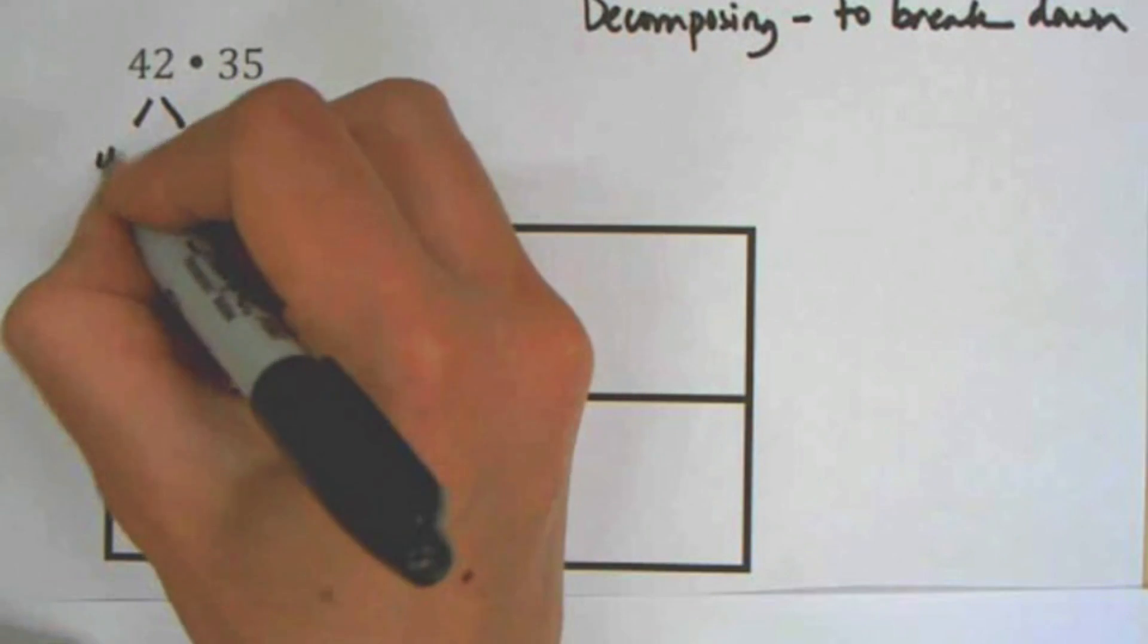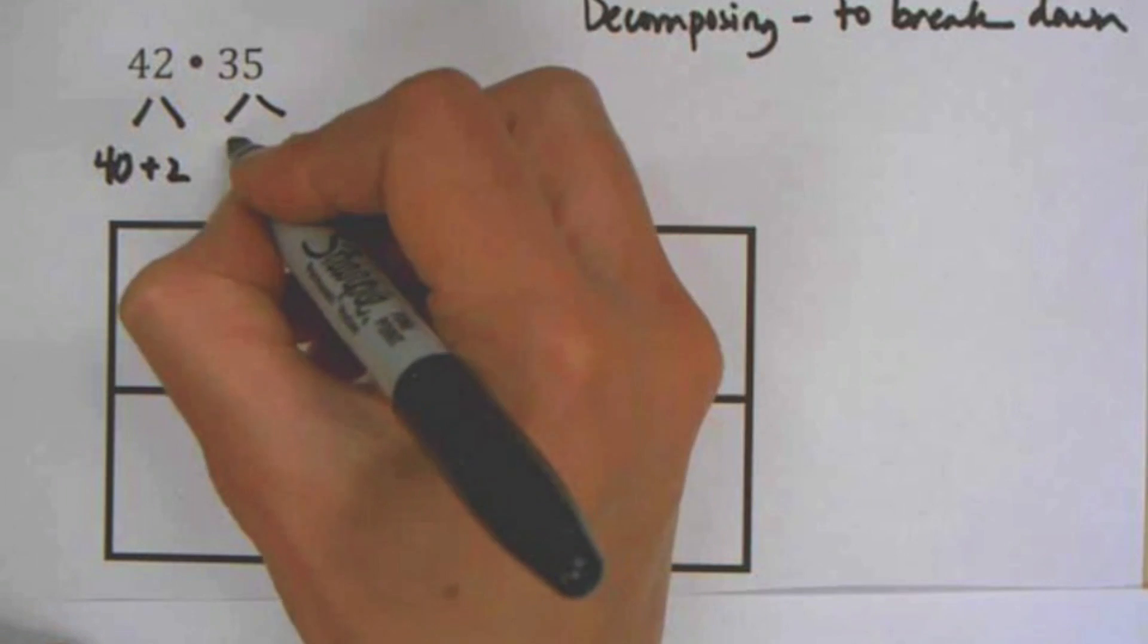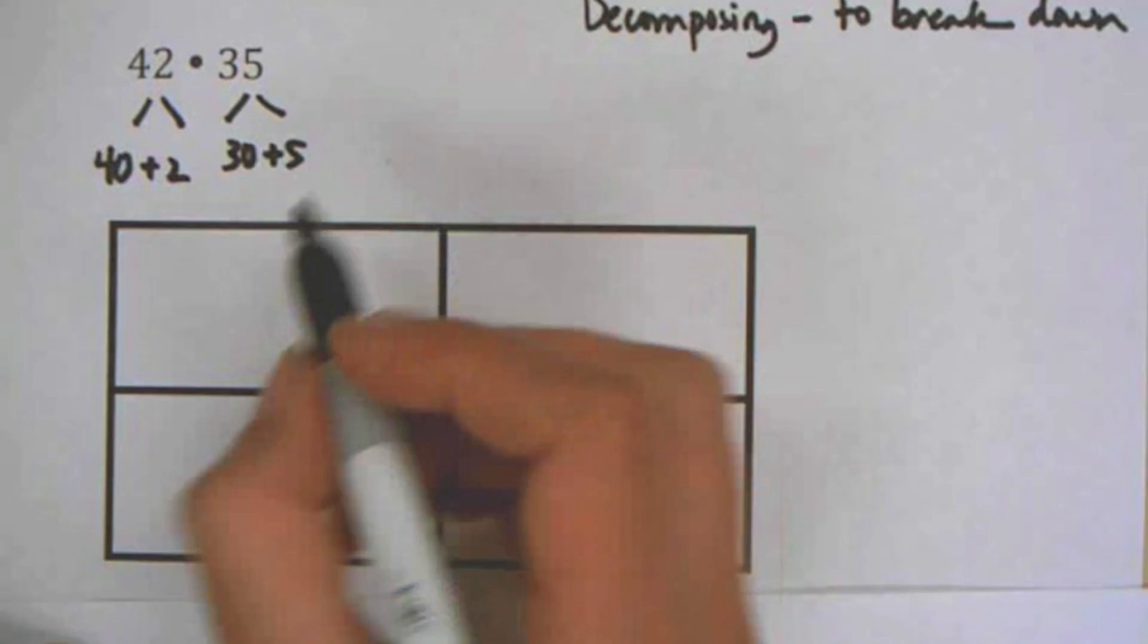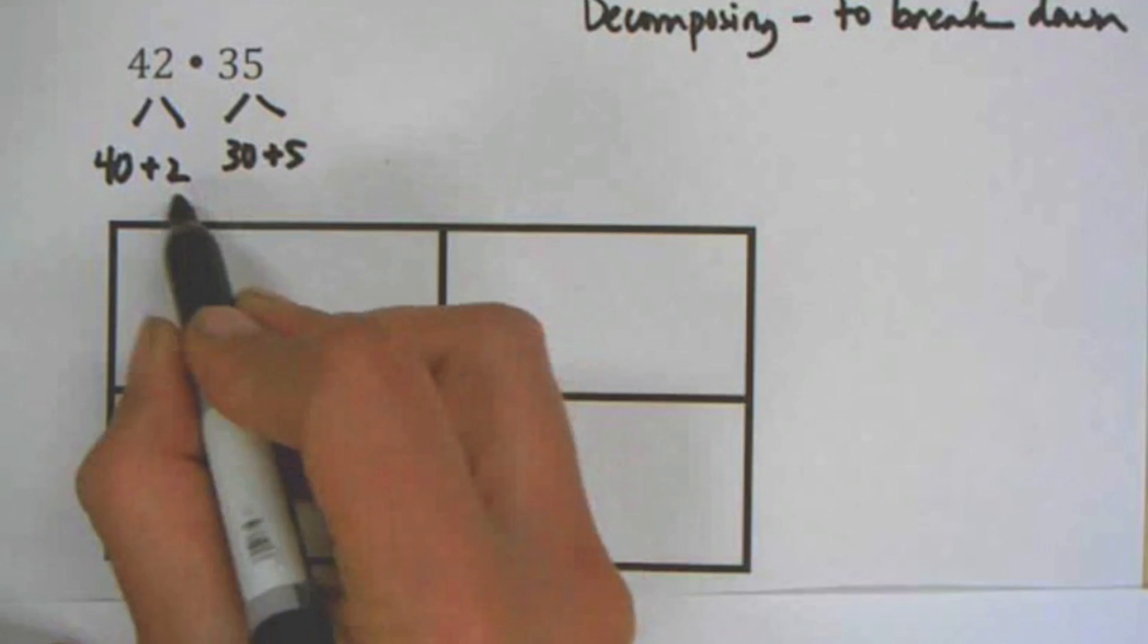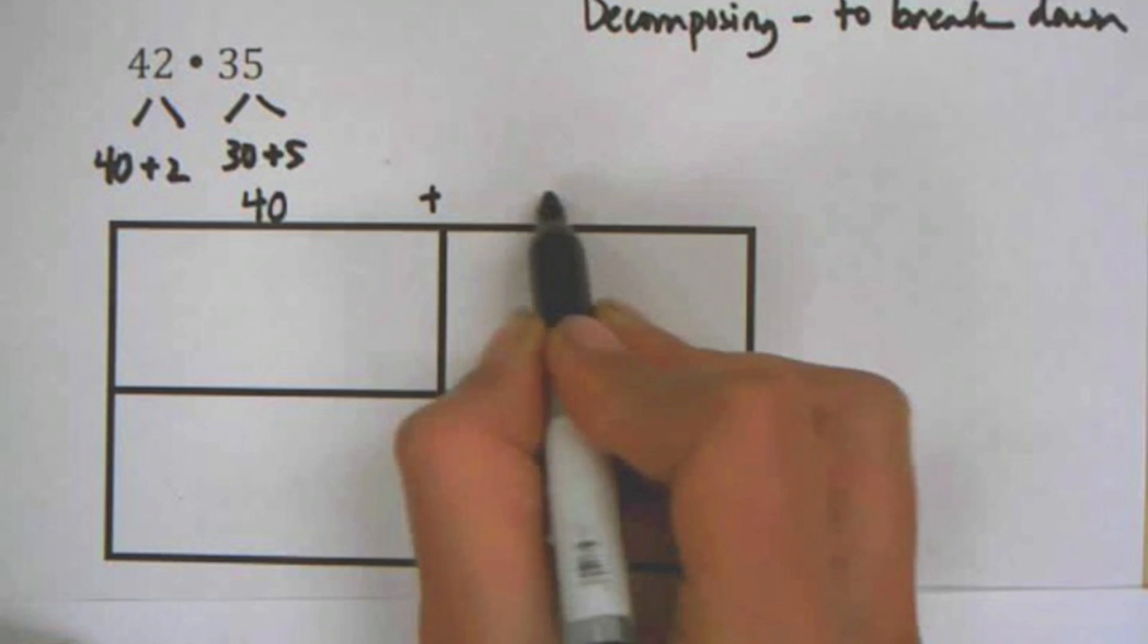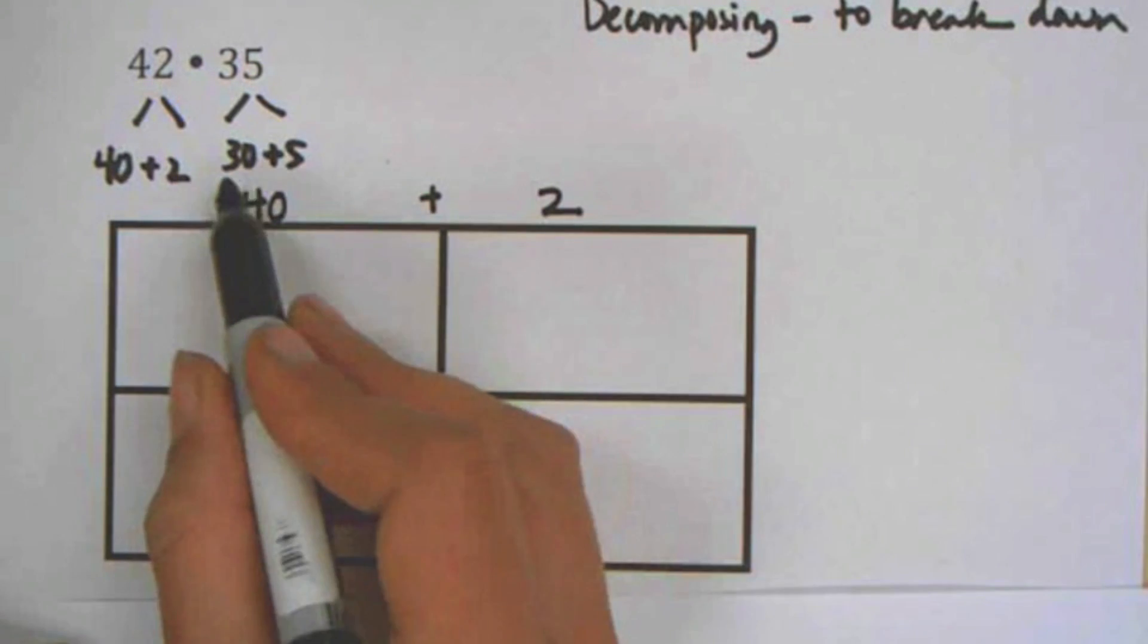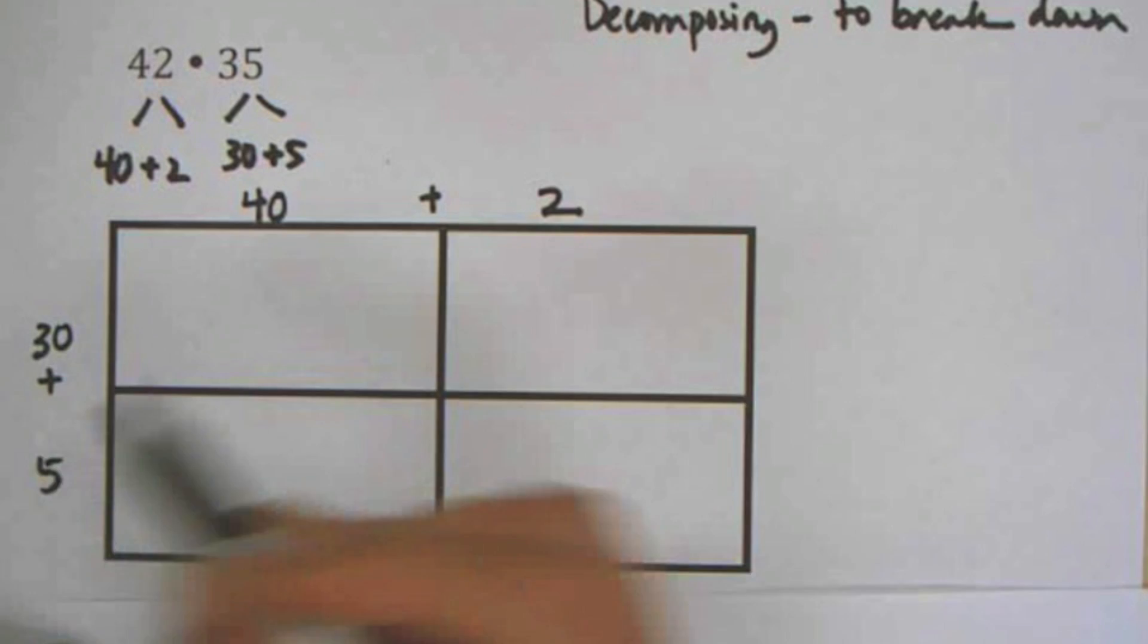So we're going to break it down by the units places. So 42 means 40 plus 2, and 35 means 30 plus 5. And then we're going to put those numbers on the side. So we're going to have one side, it doesn't matter which is which. One side will be the 42, so it'll be the 40 plus 2.